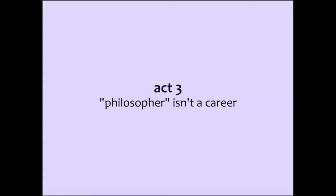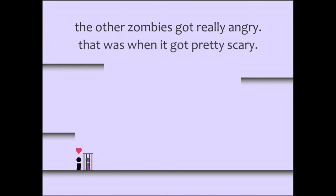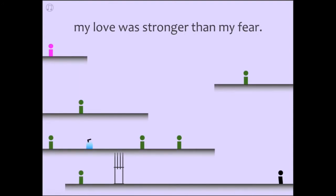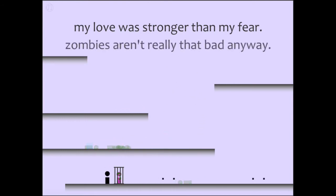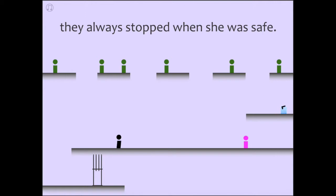Act three, philosopher. At least she was faster, that made everything easier, especially since they disappeared when I put her in the cage, as if they gave up. I'd give up. I wouldn't want to tussle with me. Nobody wants to tussle with me but my zombie girlfriend. They always stopped when she was safe. I don't understand why.